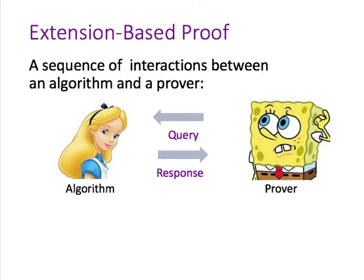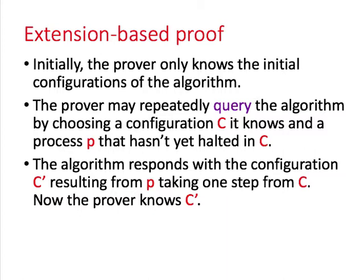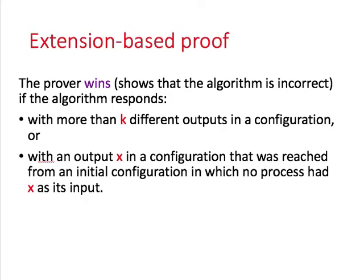An extension-based proof is a game between a prover and an algorithm which the prover is trying to show is incorrect. The prover repeatedly asks queries, and the algorithm responds to them. The prover's queries can be chosen adaptively based on the responses it gets. Initially, the prover only knows the initial configuration of the algorithm. The prover may query the algorithm by choosing a configuration c it knows and a process p that hasn't yet halted in c. The algorithm responds with what happens when p takes one step from c: the new value of the object p accessed, p's new state, and what value p outputs if it outputs a value in its new state.